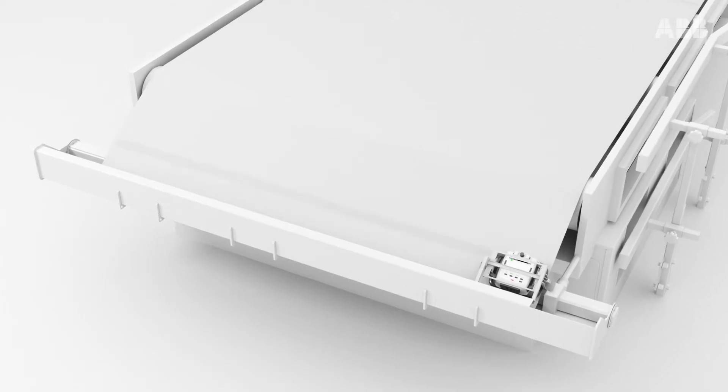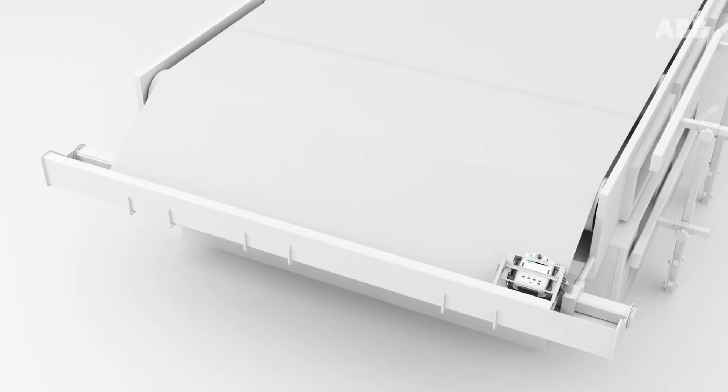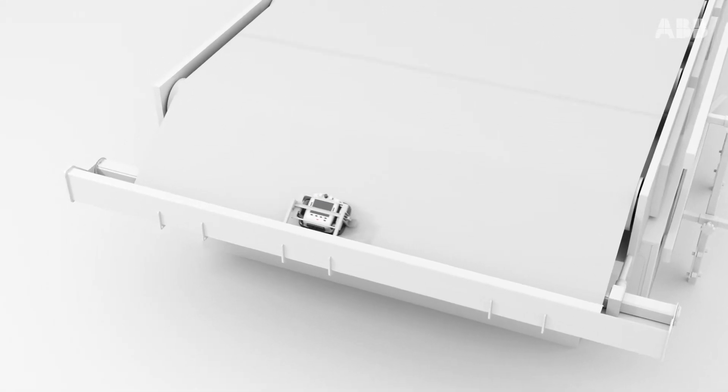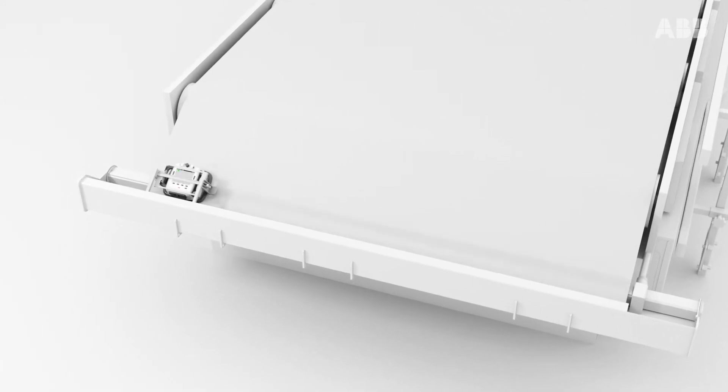ABB's units measure in both machine and cross-direction. For a CD profile, the shuttle moves across the moving felt collecting edge-to-edge data at a constant speed.